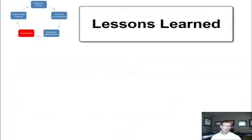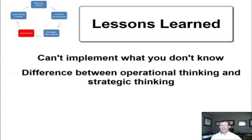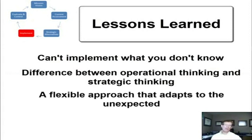This leaves us with a few lessons learned. Number one: employees cannot implement what they don't know, understand, or aren't committed to. Number two: operational thinking and strategic thinking are different disciplines — we need to spend time aligning people in both camps. Number three: we can't give up on strategy when unanticipated events occur; we need to be flexible and adaptive, but we just can't throw up our arms and say it was a bad strategy to begin with.